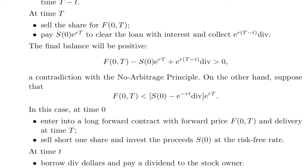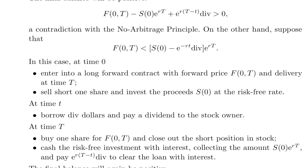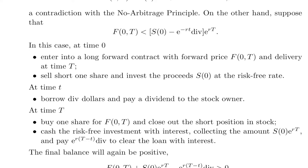On the other hand, suppose that F(0,T) is less than (S0 − e^(−rt) · div) · e^(rT). In this case at time 0, enter into a long forward contract with forward price F(0,T) and delivery at time T. Sell short one share and invest the proceeds S0 at the risk-free rate. At time t, borrow the div dollars and pay a dividend to the stock owner.